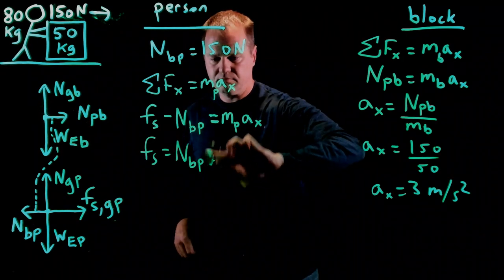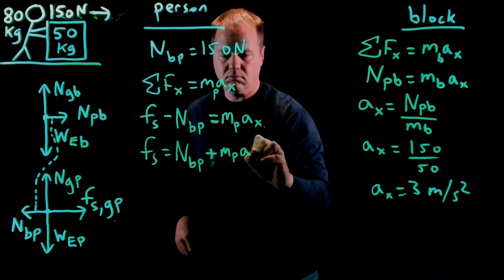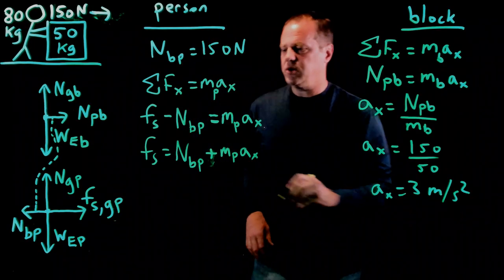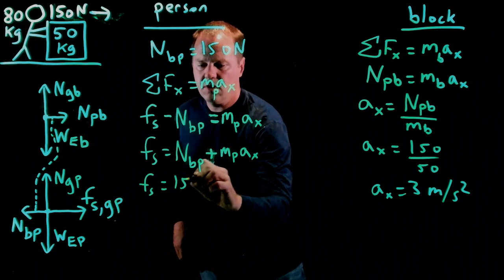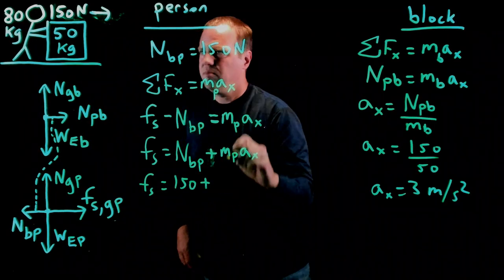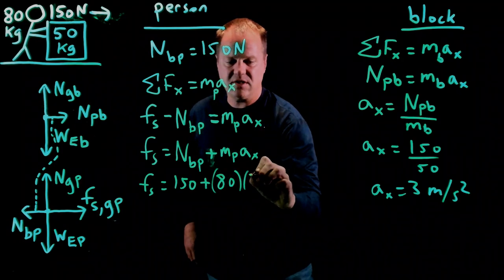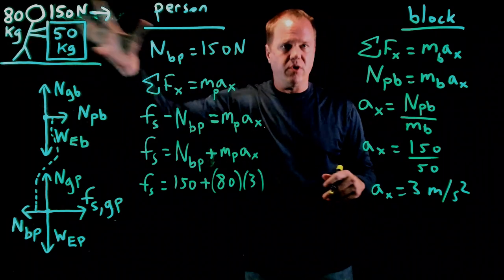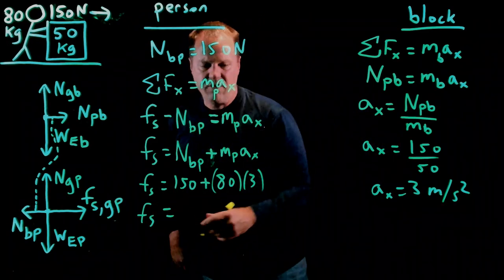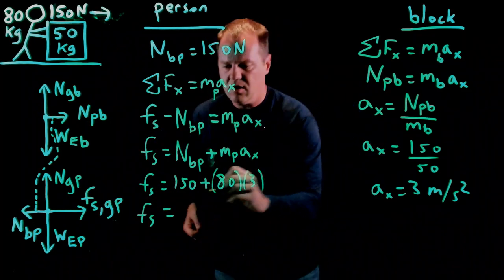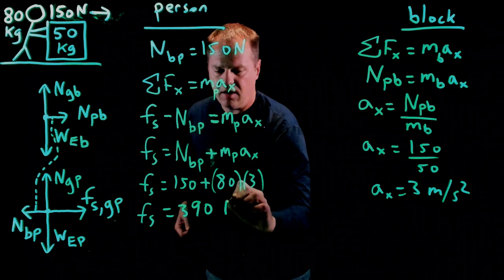Oops. Okay, and then we can throw in the numbers. So, the static friction will be normal force of 150 newtons plus mass of the person, which is 80 times the acceleration, which we're assuming is the same as the block if the person is moving together. And then throw this in your calculator, or maybe do it in your head. We get a force of 390 newtons.